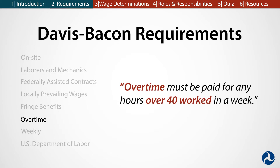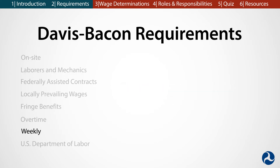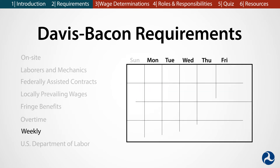Overtime. Laborers and mechanics working on DBA-covered projects must be paid overtime pay, which is time and a half, for any hours worked in addition to the 40-hour work week. Workers earn their fringe benefits for all hours worked, including overtime hours, at the rate in the wage determination. Weekly. Laborers and mechanics that work on DBA-covered projects must receive their pay and fringe benefits once per week.